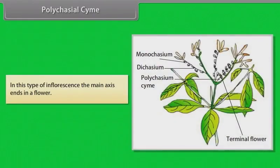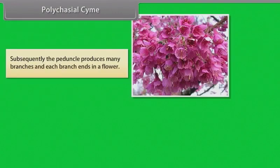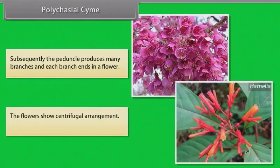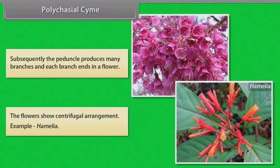In polychasial cyme, the main axis ends in a flower; subsequently the peduncle produces many branches and each branch ends in a flower. The flowers show centrifugal arrangement. Example: Hamelia.